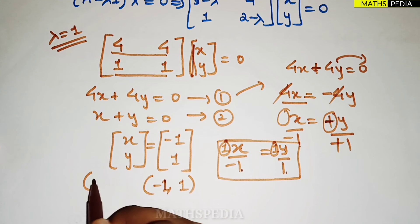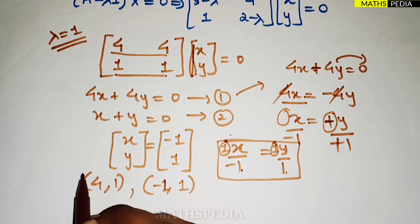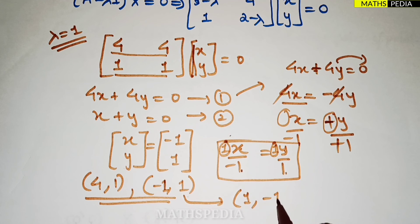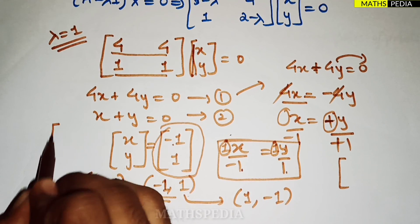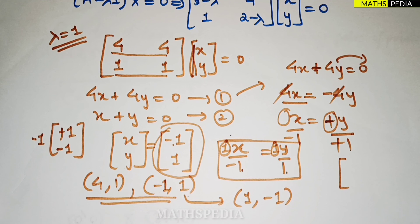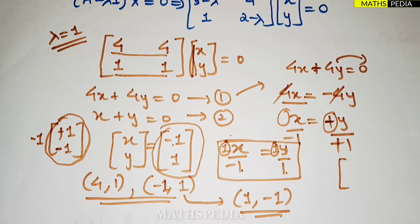To summarize: for λ = 6 the eigenvector is [4, 1], and for λ = 1 the eigenvector is [−1, 1]. One note: the sign of an eigenvector may change — you might get [1, −1] instead of [−1, 1]. This is acceptable, because a scalar multiple (including −1) of an eigenvector is still a valid eigenvector. The values inside the matrix are what matter.